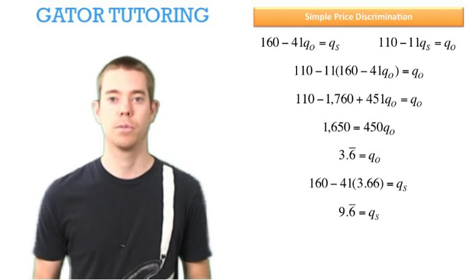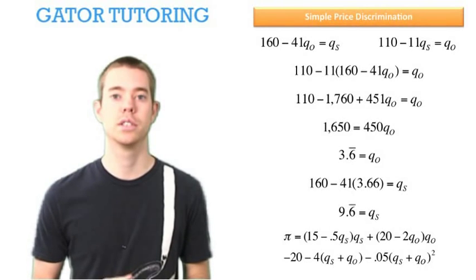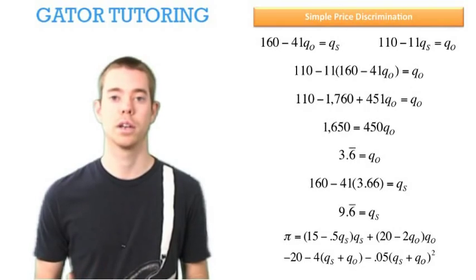We're now ready to find profit. Our profit function is a function of QS and QO. Plug in the values we found, remembering not to round, and we can solve for profit.